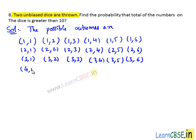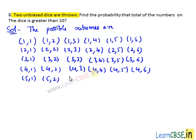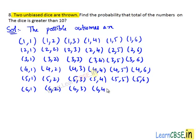(4,1), (4,2), (4,3), (4,4), (4,5), (4,6). (5,1), (5,2), (5,3), (5,4), (5,5), (5,6). (6,1), (6,2), (6,3), (6,4), (6,5), (6,6). That is total number of possible outcomes are 36.